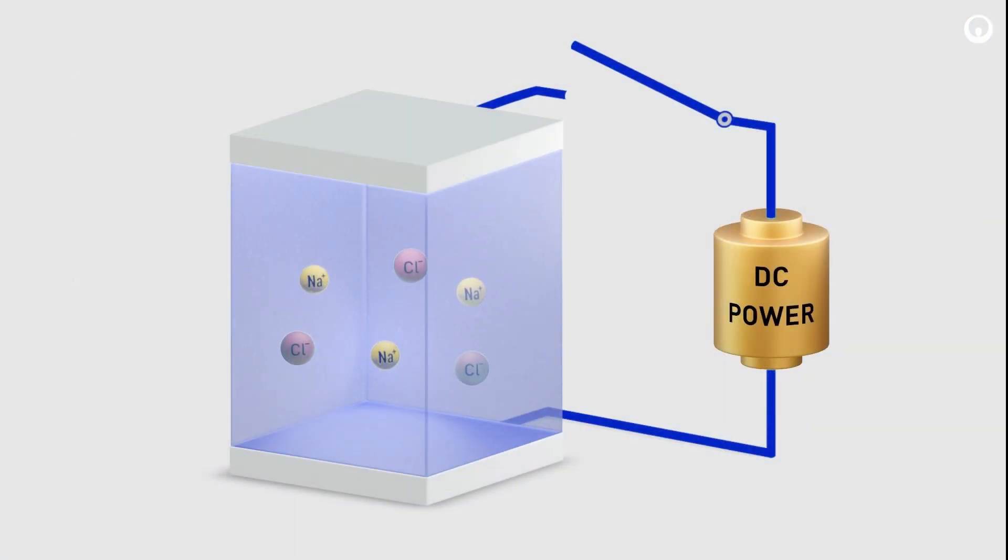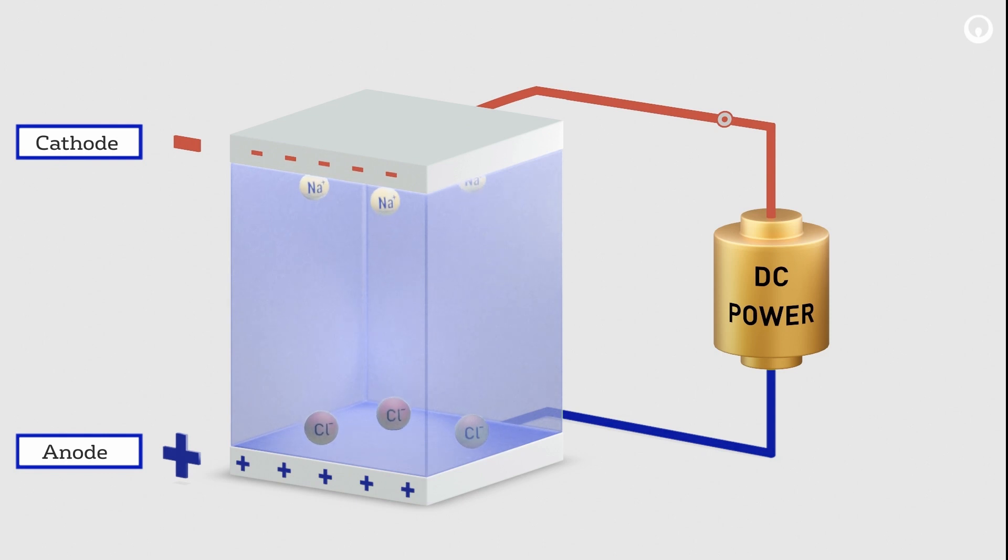When electrodes are placed in water with dissolved ions, those ions move by electrical attraction. The negatively charged anions move to the positively charged anode, and the positively charged cations move toward the negatively charged cathode.